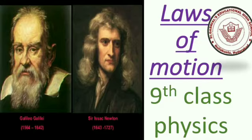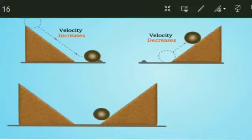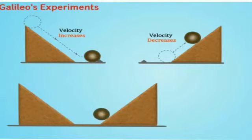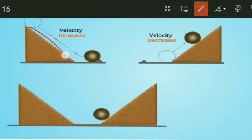In the absence of external forces, Galileo came up with two ingenious thought experiments. He did this experiment on inclined planes with smooth surfaces and observed that the smoother the surface, the further the ball traveled. When the surface is very smooth, the ball covers more distance.